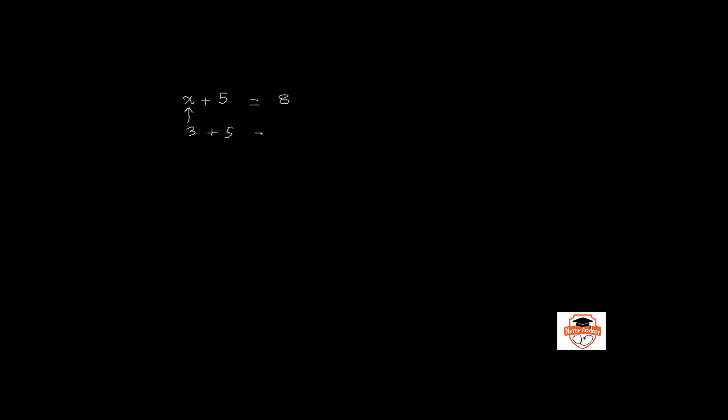Consider this: what's x if x plus 5 evaluates to 8? The answer is x is equal to 3, because only 3 plus 5 will give you 8. This is called a linear equation in one variable or in a single variable.